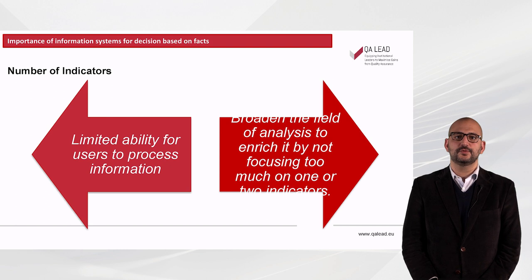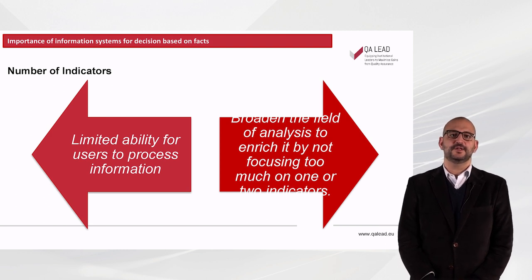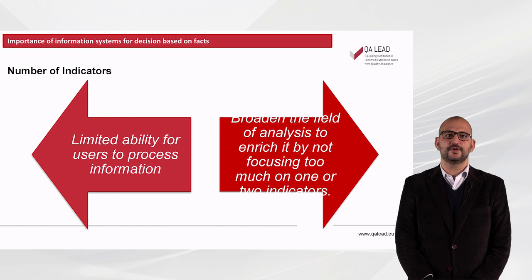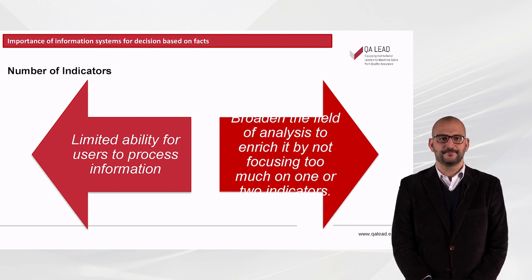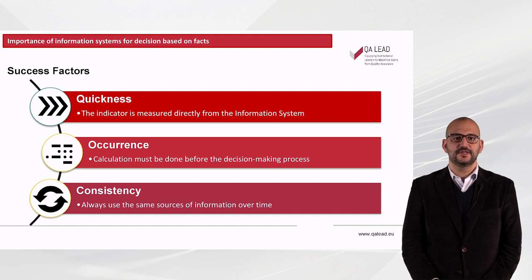It should also be noted the need to create a good balance between two additional aspects. On the one hand, there is a limited ability for users to process information, so one should bear in mind that too many indicators lead to inefficiency. But very few indicators will not allow us to get a clear picture of what we need to measure. On the other hand, there is a need to broaden the field of analysis by not focusing too much on one or two indicators. The quickness — that is, the calculation of the indicator directly from the information system — and the occurrence — namely, the calculation must be done before the decision-making process — and consistency, particularly always using the same sources of information over time, are all important properties.